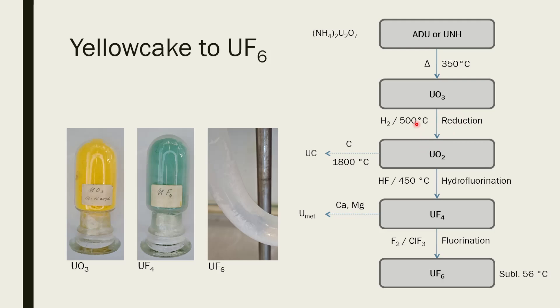You would want to reduce it. The number of ways that you can reduce the uranium in the oxidation state +6 to +4 are countless, but hydrogen is just the cleanest way as there are no other ions that you will introduce to your mixture. And after that, you will hydrofluorinate. So with HF, which is really nasty stuff.